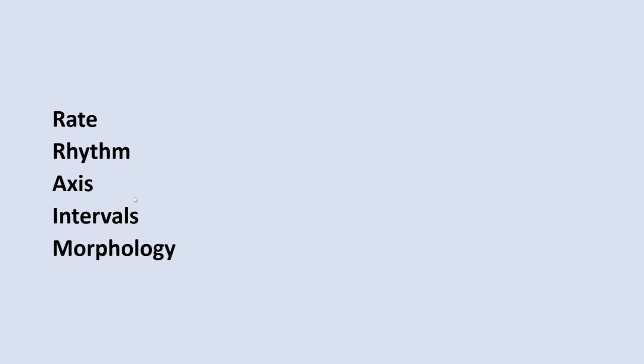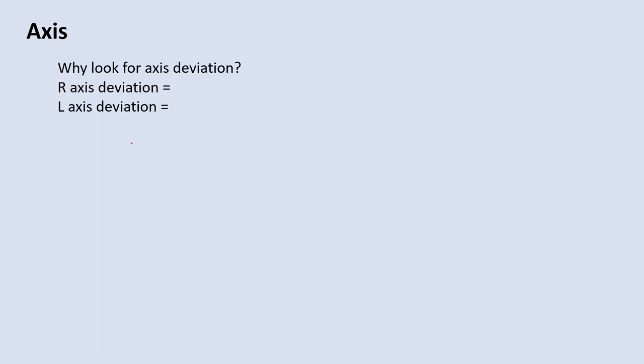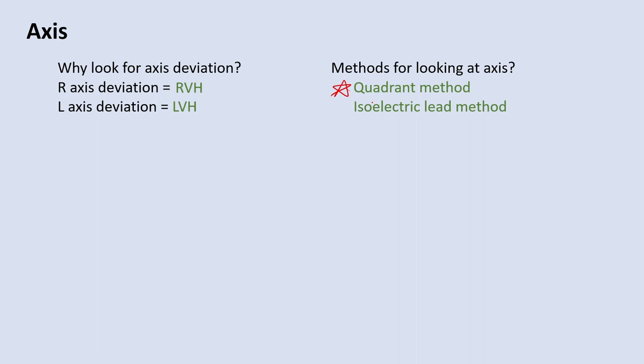After assessing the rhythm, we move on to axis. Axis is basically determining the orientation of the heart. Right axis deviation can tell us if there's potentially right ventricular hypertrophy, and left axis deviation can tell us if there's left ventricular hypertrophy. More generally, it gives us an idea of different pathologies going on with the heart. There are two ways to look at the axis: the quadrant method, which is the most simple, and the isoelectric lead method, which is more cumbersome.